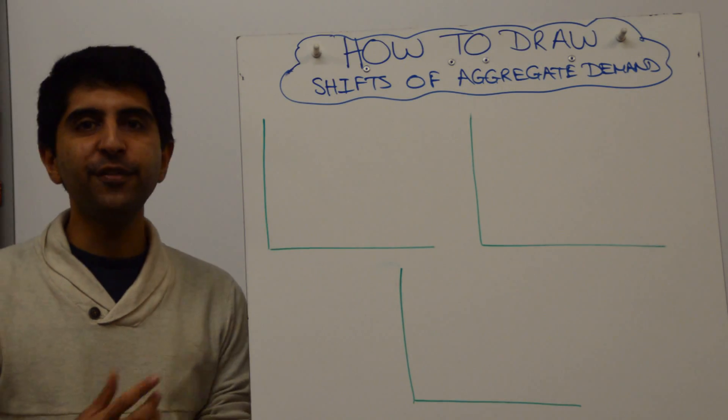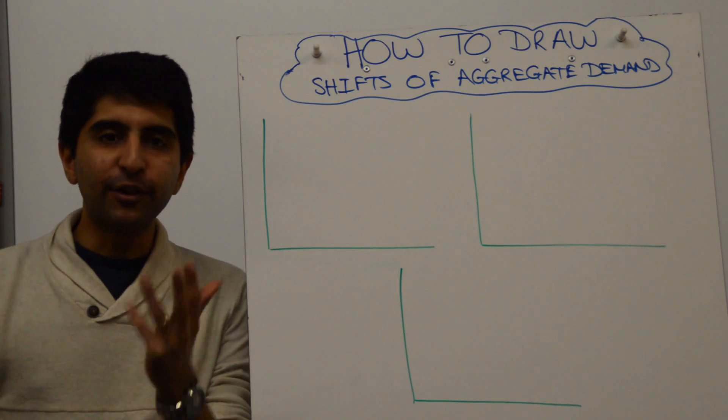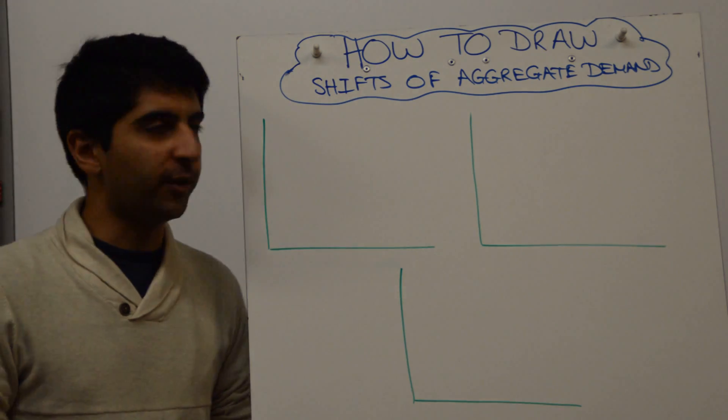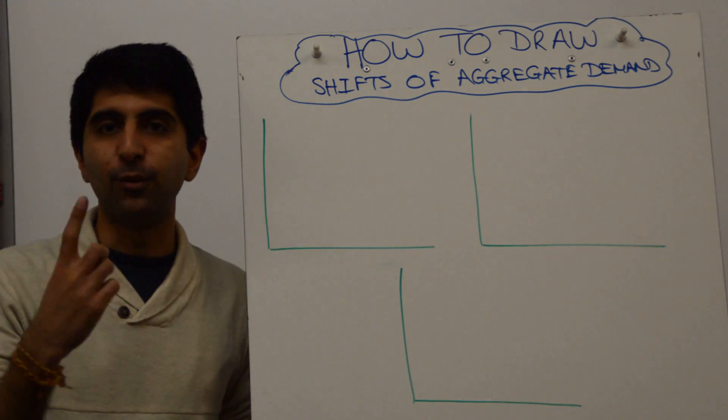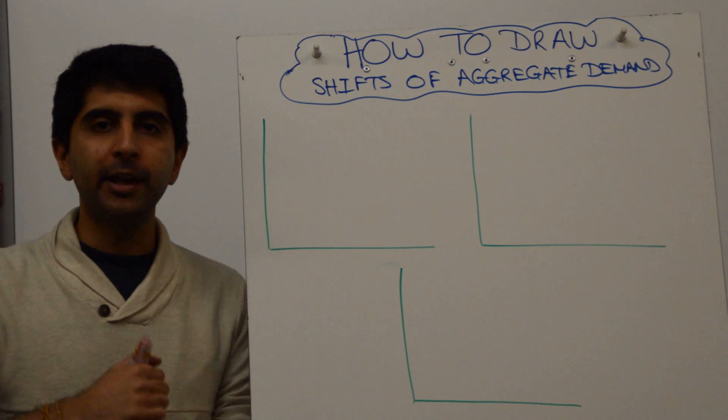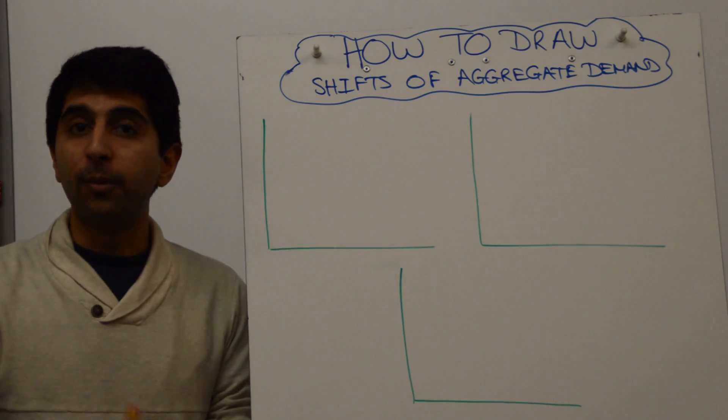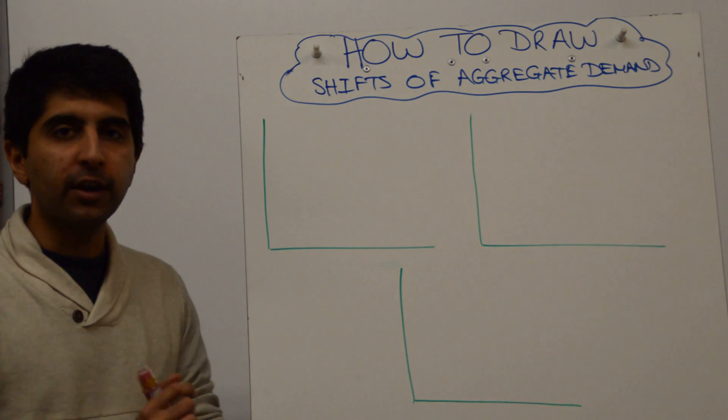Hi everybody! You want to show shifts of aggregate demand. There are three different ways you can draw these shifts. You just do whichever one you're comfortable with. You don't need all three in your exam, you just need one of these three. But depending on how you've been taught, you'll be used to one of these three or maybe not. So how do you construct these diagrams?